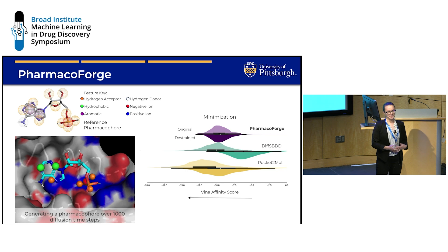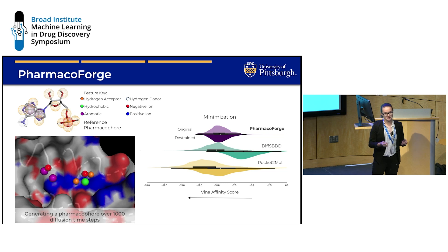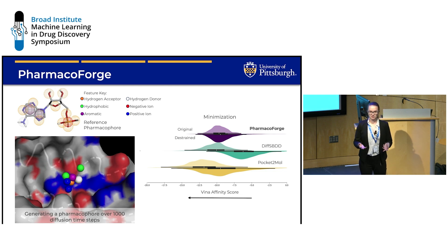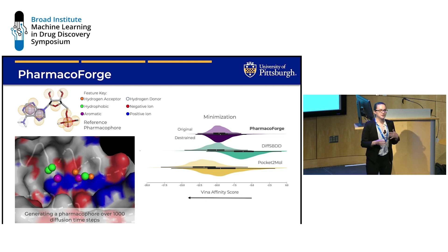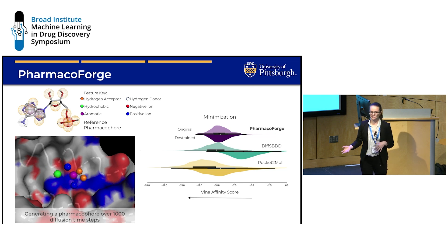The main issue we faced was evaluating pharmacophore quality. We can measure the validity of the pharmacophore and make sure there exists a corresponding structural feature in the pocket that matches our pharmacophore centers. But a pharmacophore is really only as good as its performance in downstream screening tasks. So we screened with our pharmacophores and compared results to de novo-generated ligands — specifically PocketMol and Diff-SBDD, where PocketMol is an autoregressive-based method and Diff-SBDD is a diffusion method.